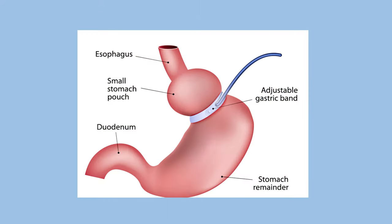The adjustable gastric band is a silicone device placed around the upper part of the stomach to limit the amount of food a person can eat. The effect on obesity, related diseases, and long-term weight loss is less than with other procedures. Because of this, over the past decade its use has declined.